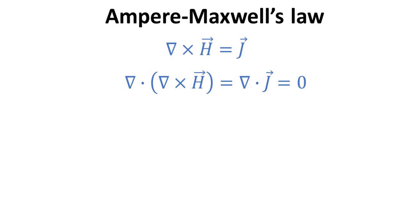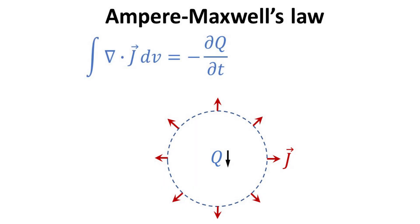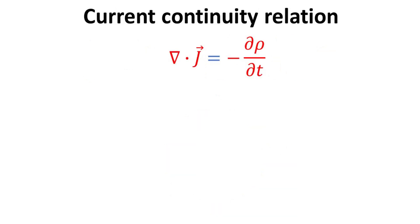Maxwell noticed that if he takes the divergence of Ampere's law, it requires the divergence of the current density to be zero, because the divergence of the curl of any vector field must be zero. However, the current density, which describes the flow of charges, should be allowed to diverge or converge. Particle conservation requires that the rate of change in particle number must balance their inflow or outflow from the enclosed volume. For the case of charge current, the charge current emanating out of the volume must be balanced by the rate of change in charge q enclosed within. This yields the well-known current continuity equation.